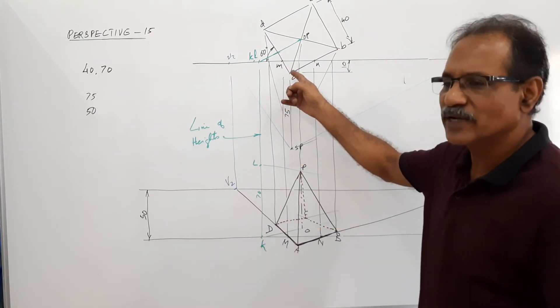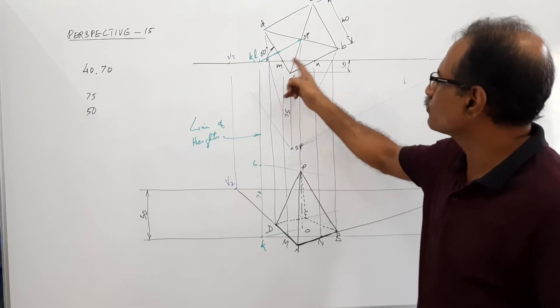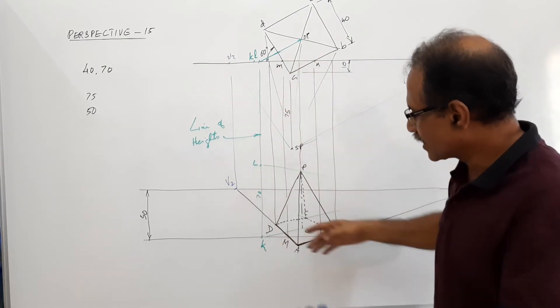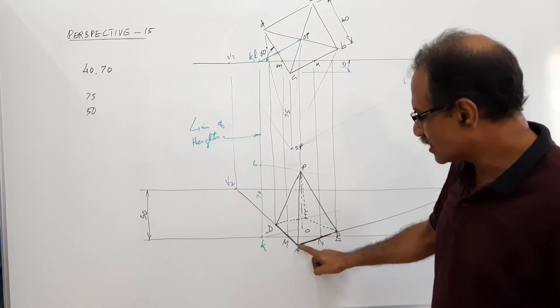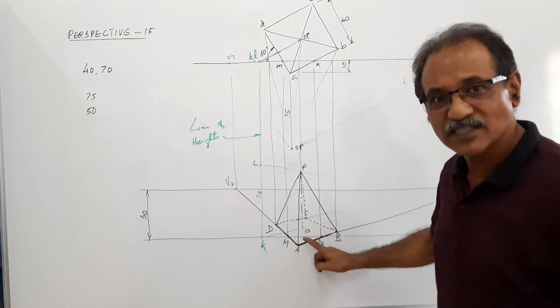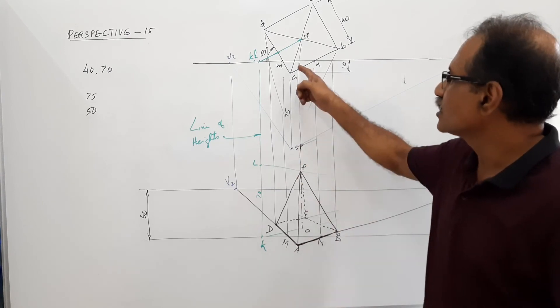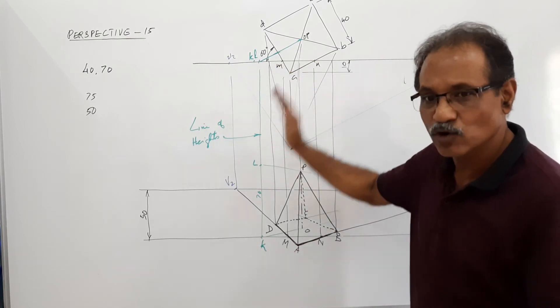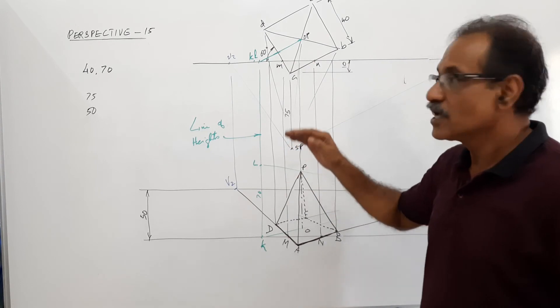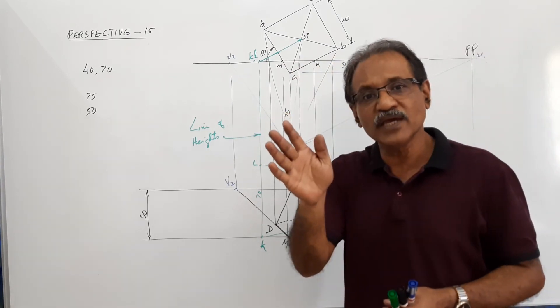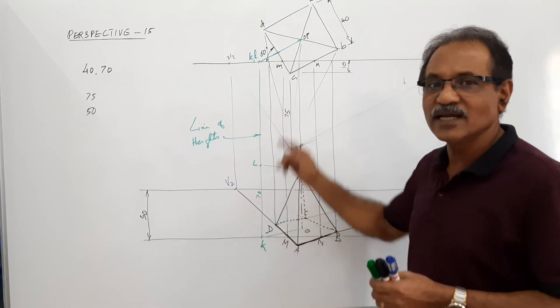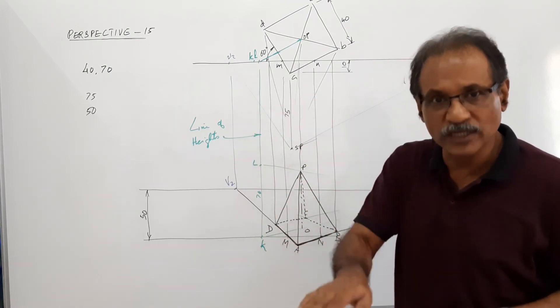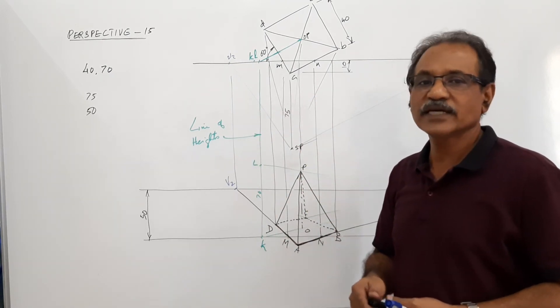I have not dropped any intercept from A. Instead, I dropped intercepts from M and N and then connecting them to their respective vanishing points. I got the point A. You can see the point A is below GL. This is the first time you are getting like that. Why? Because A is in front of BP and on the ground.